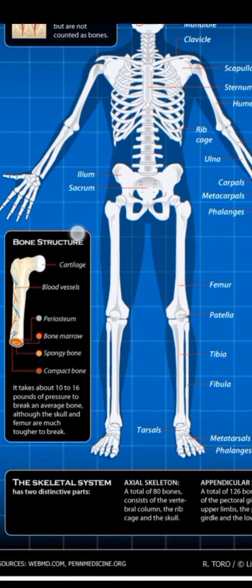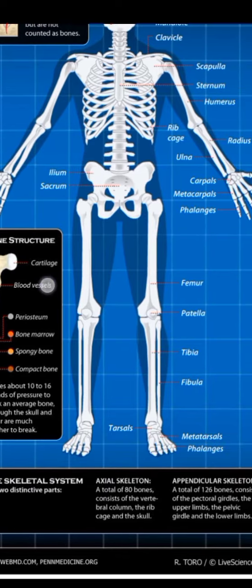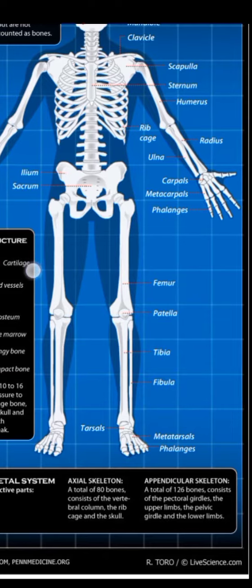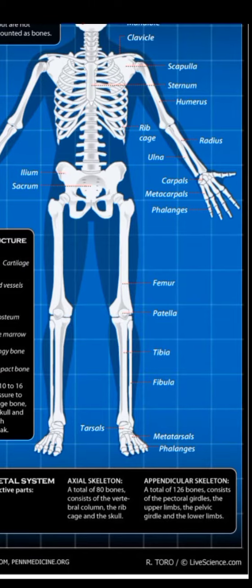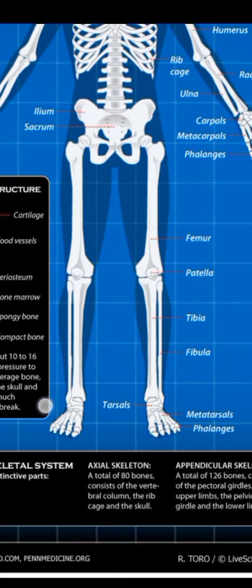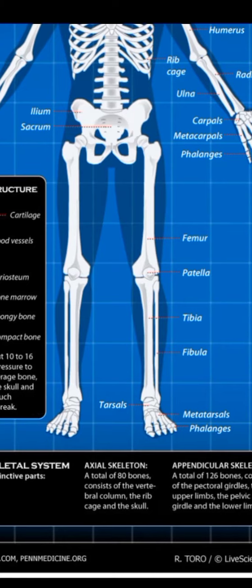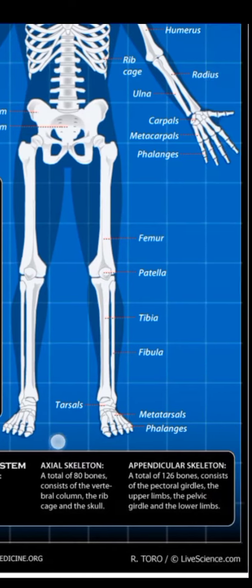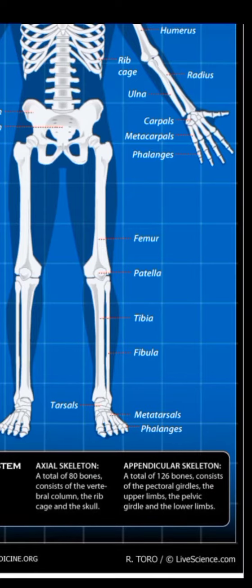The human skeletal system contains two distinctive parts: axial skeleton and appendicular skeleton. The axial skeleton, a total of 80 bones, consists of the vertebral column and the ribcage. The appendicular skeleton, a total of 126 bones, consists of the pectoral girdle, the upper limb, the pelvic girdle, and the lower limb.